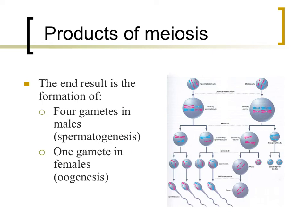Females produce eggs in a process called oogenesis. The suffix genesis still means creation of, and oa refers to the scientific name of egg cells, which are oocytes. Females contribute all of the cell parts or organelles, so only one of the four cells produced during this process is capable of producing offspring. While the genetic material is split evenly, the cytoplasm is not for female gametes during this process. One cell ends up with the vast majority of cell parts, while the other three end up with very little. The three smaller cells are referred to as polar bodies.